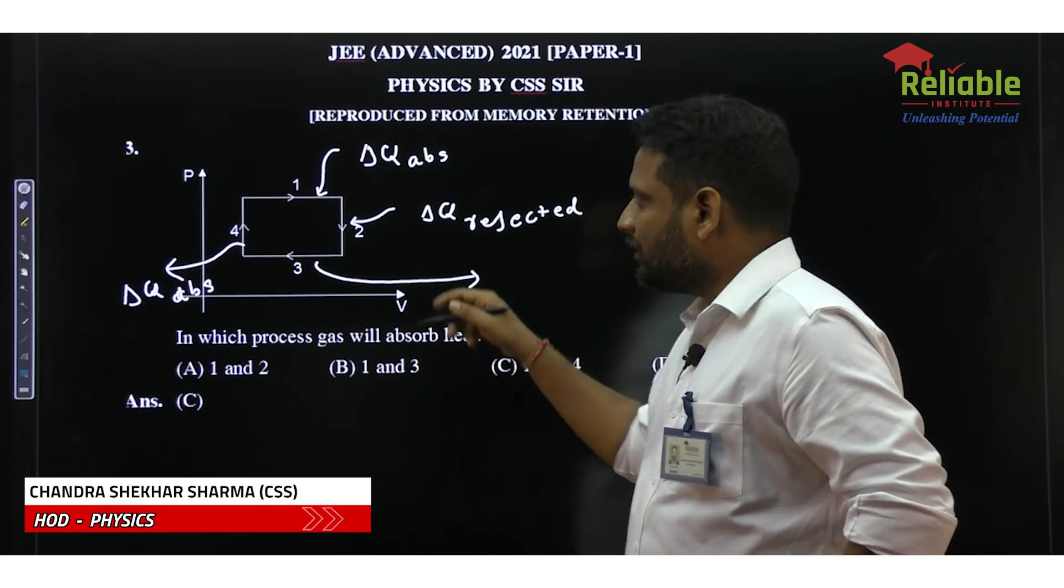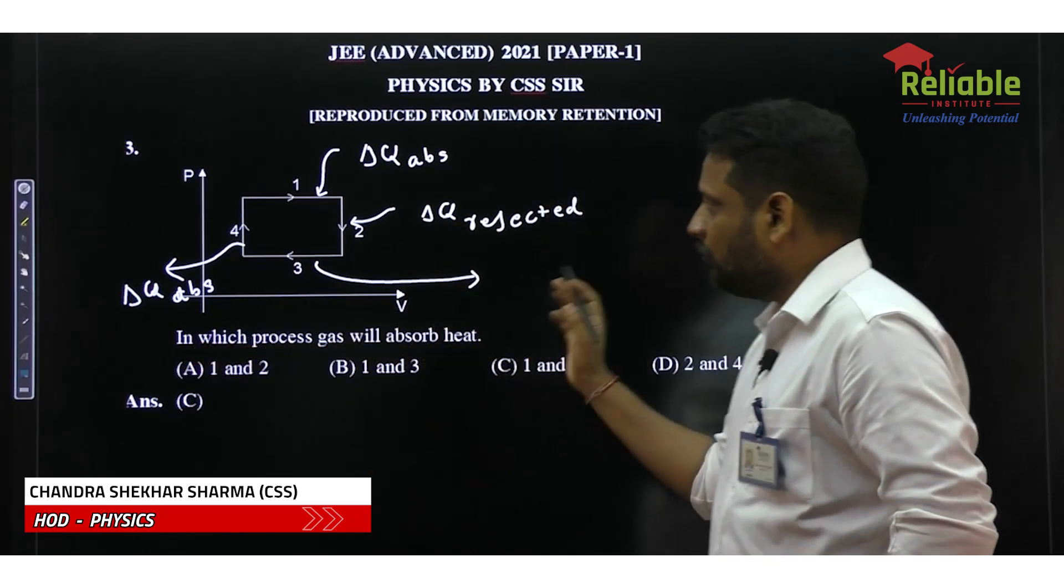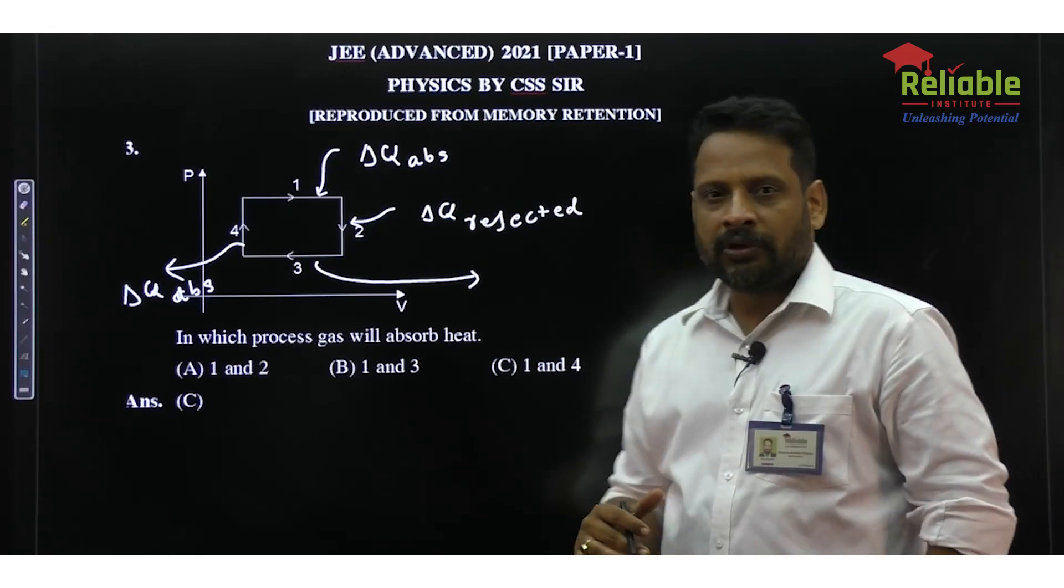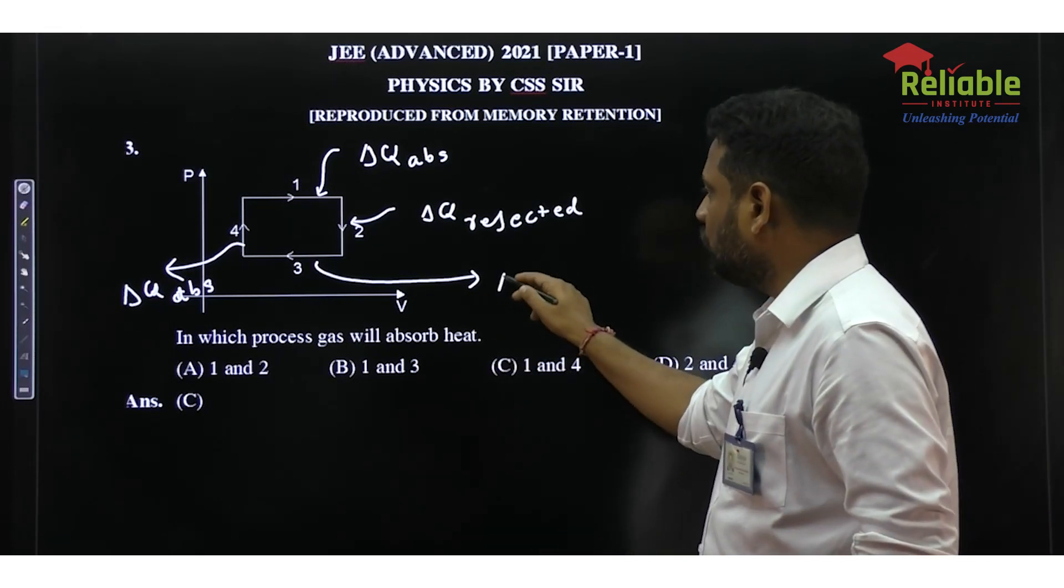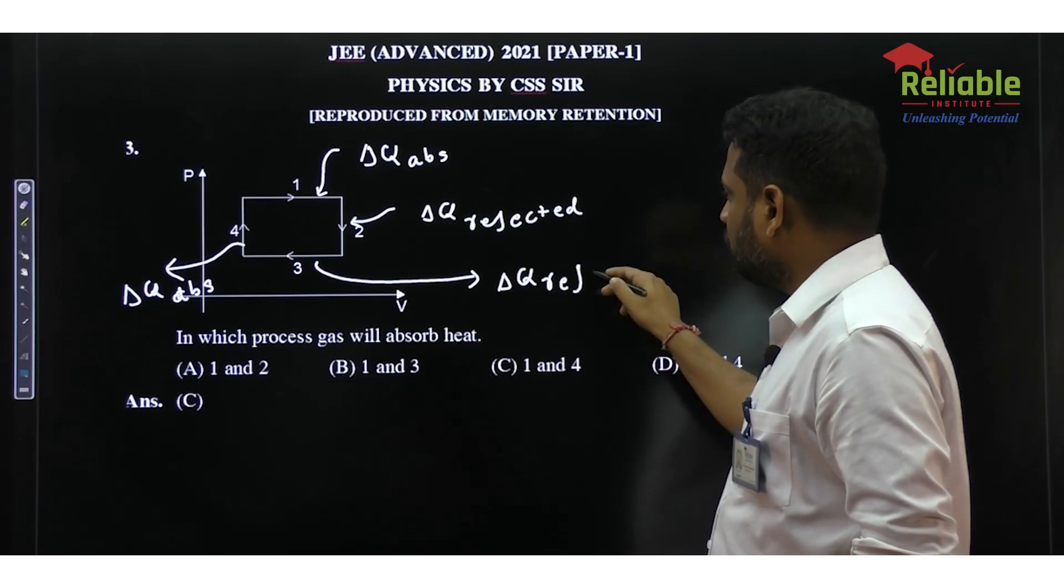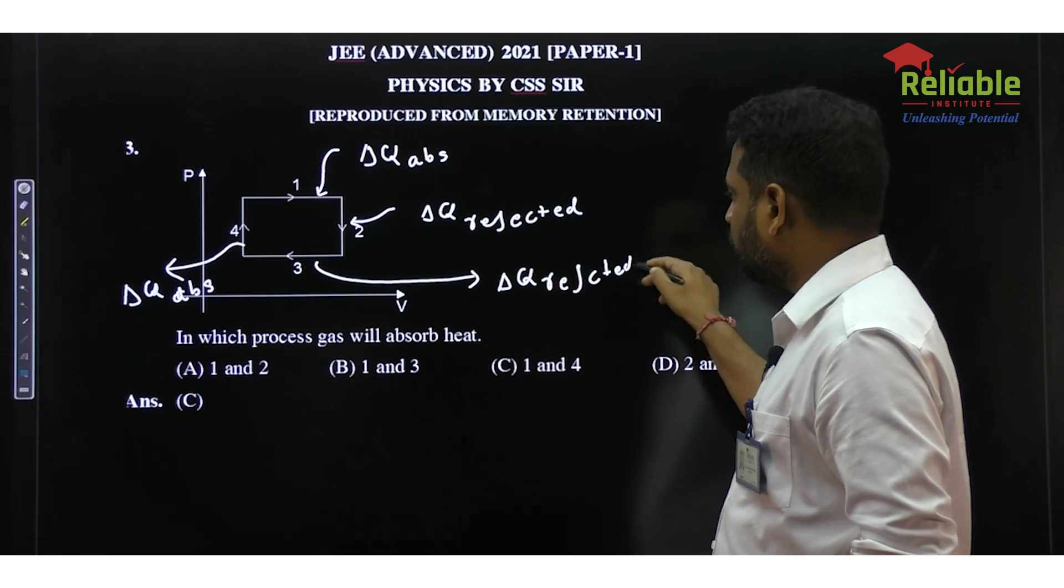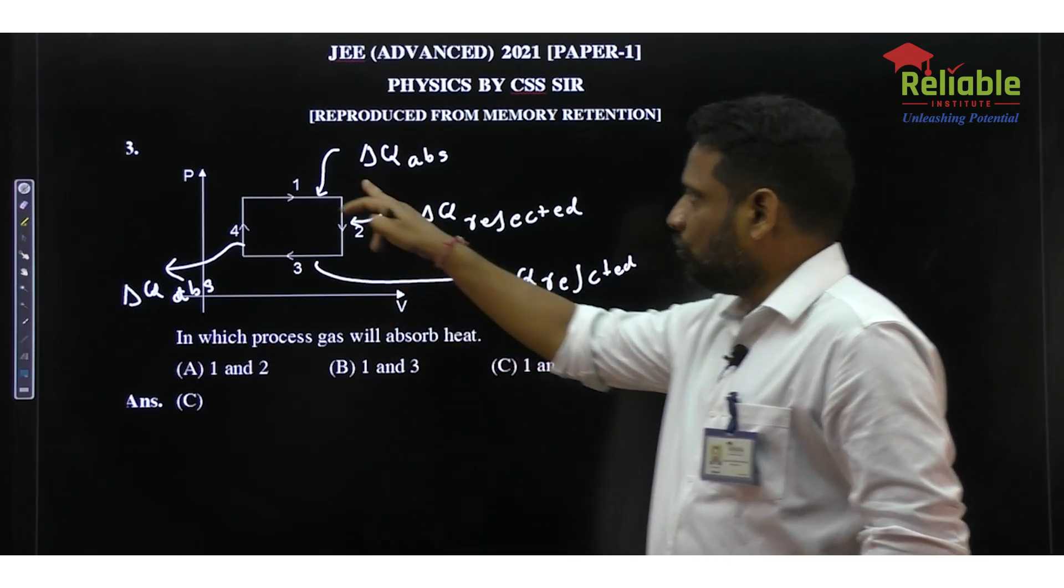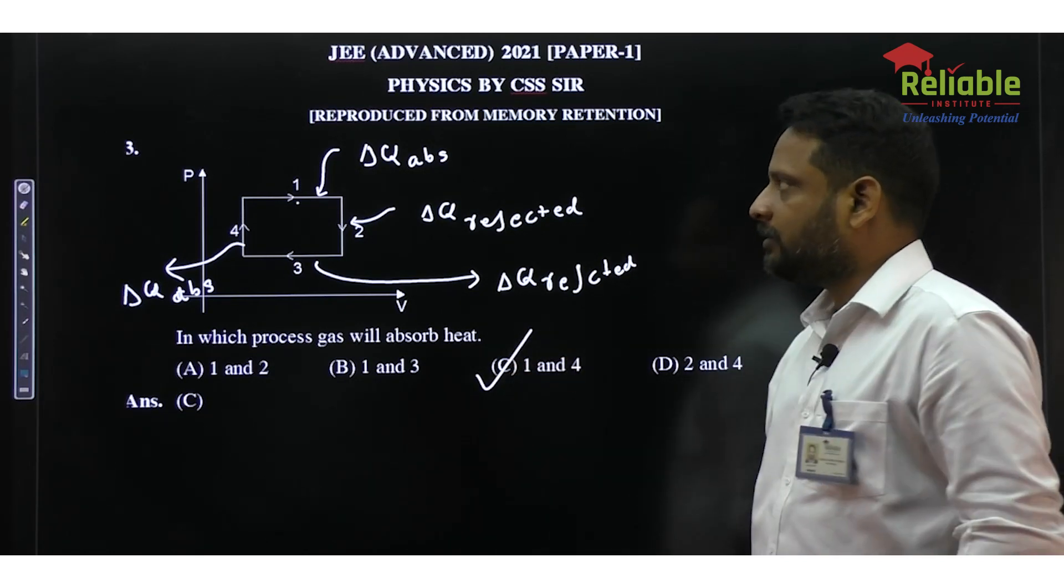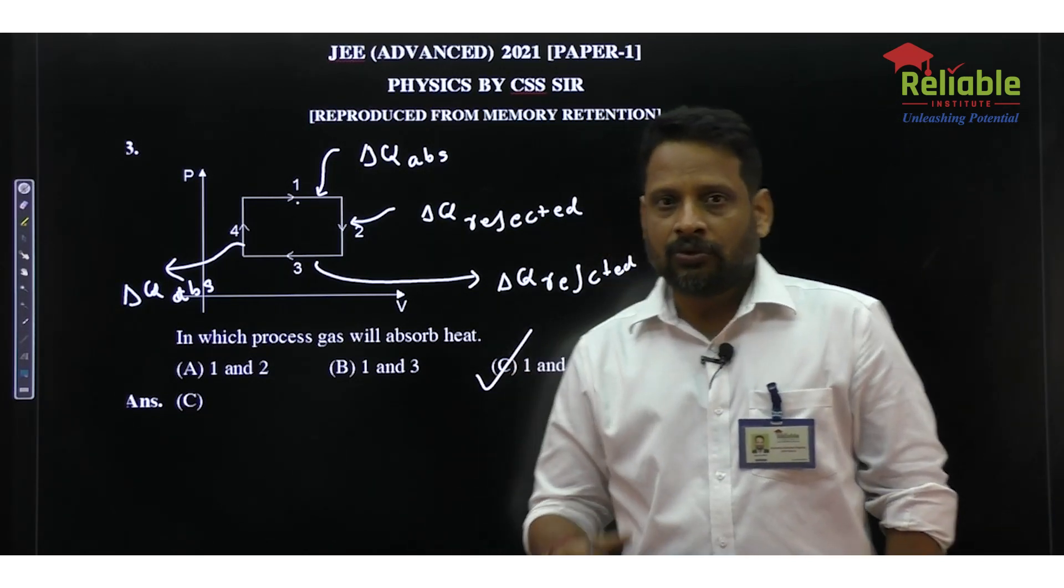Similarly in last process 3, this is isobaric process again. Volume is decreasing so temperature is going down. When temperature is going down, gas is releasing some energy, so Delta Q is negative which means that gas rejects some energy. So these are the two processes in which gas absorbs heat and the correct answer is C.